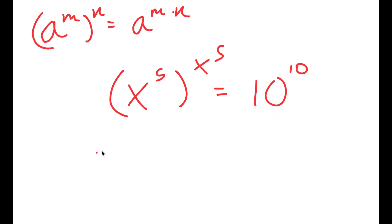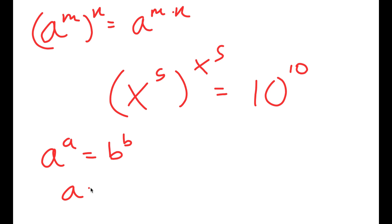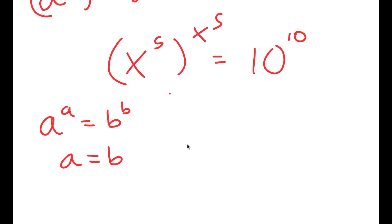My final property of exponents I'm going to use for this video is that if I have something in the form a to the power of a is equal to b to the power of b, this means that a is equal to b. So in this case x to the power of 5 is equal to 10.